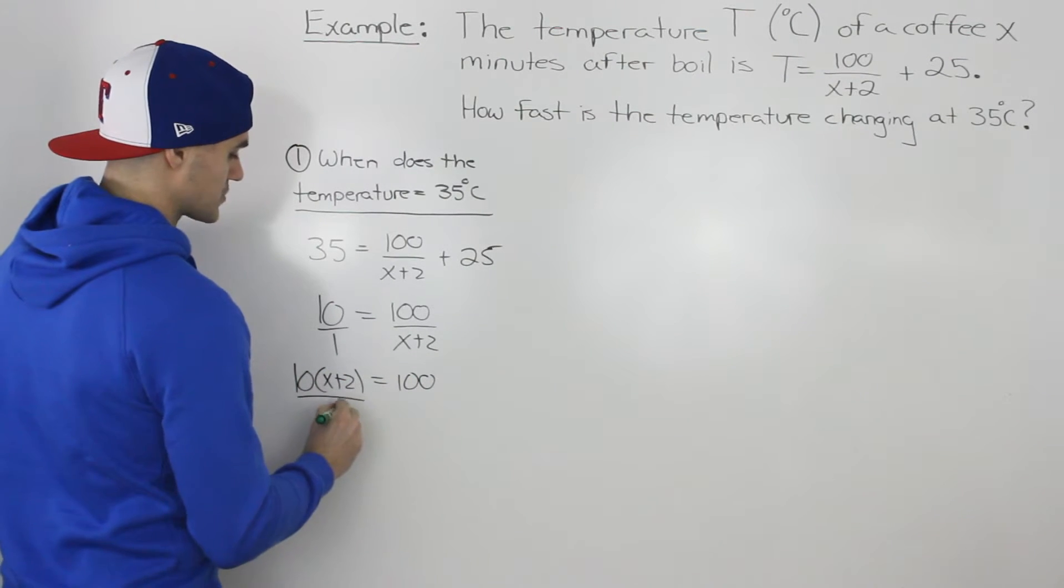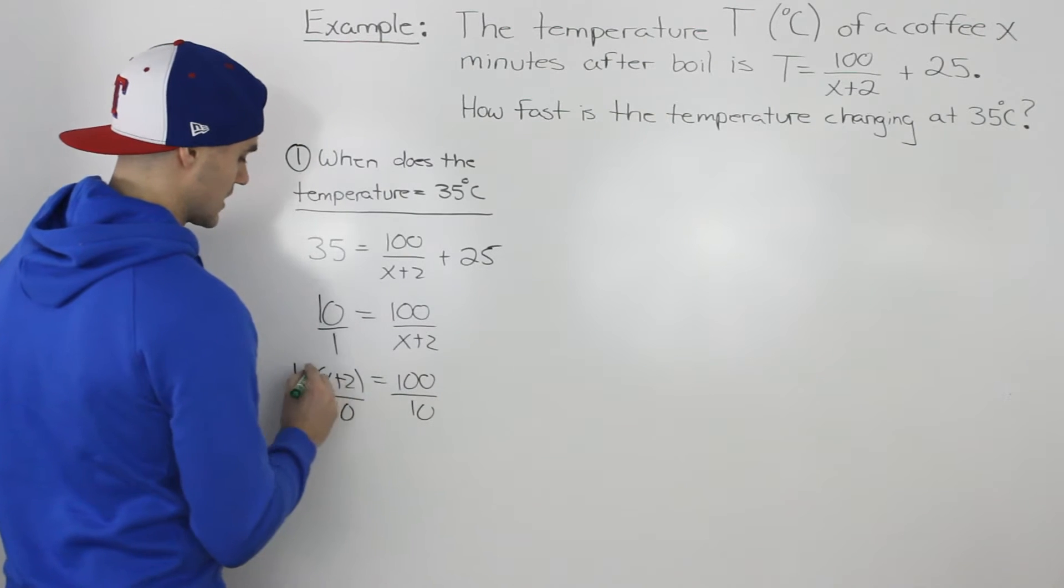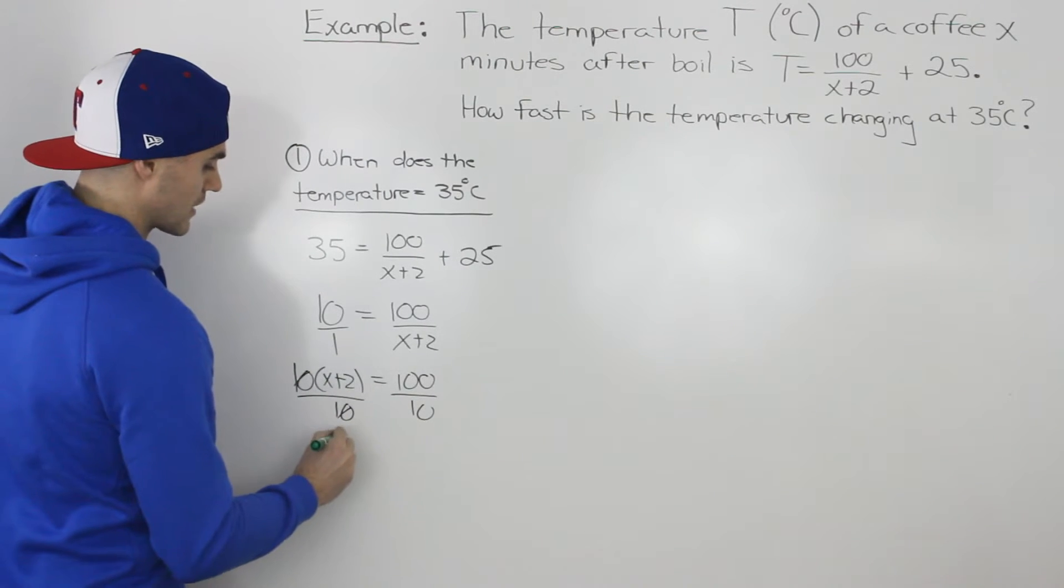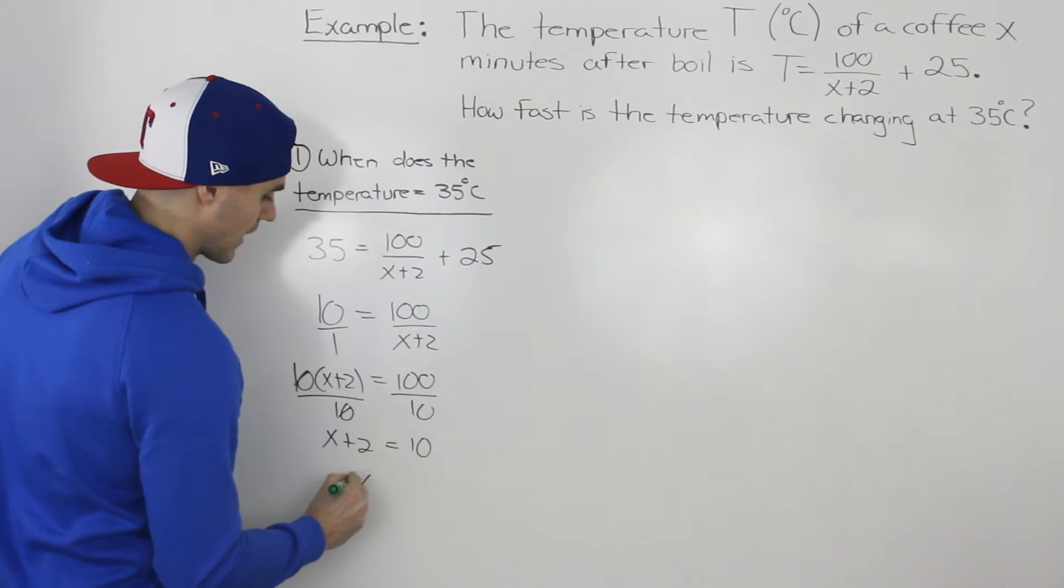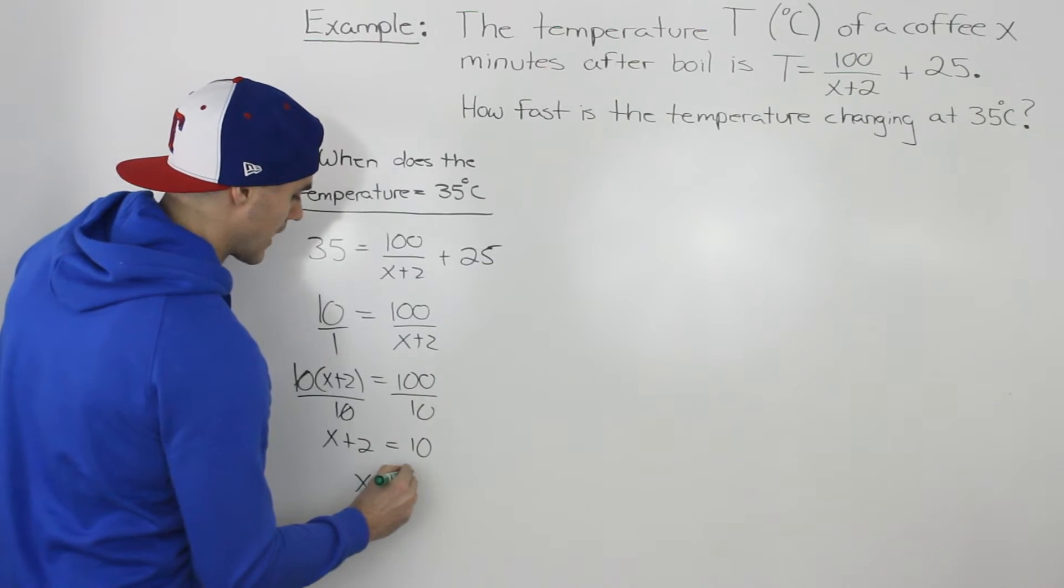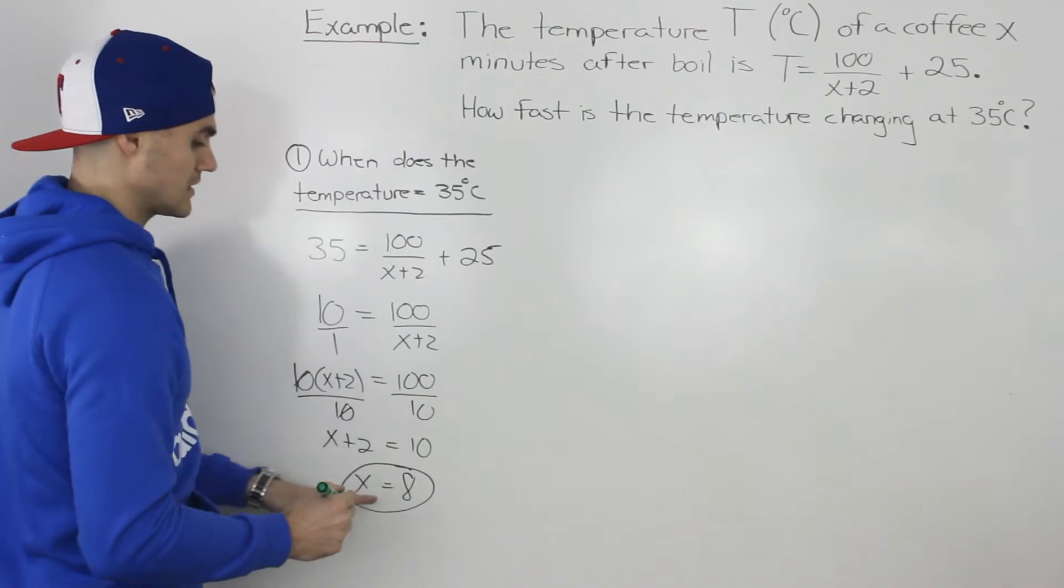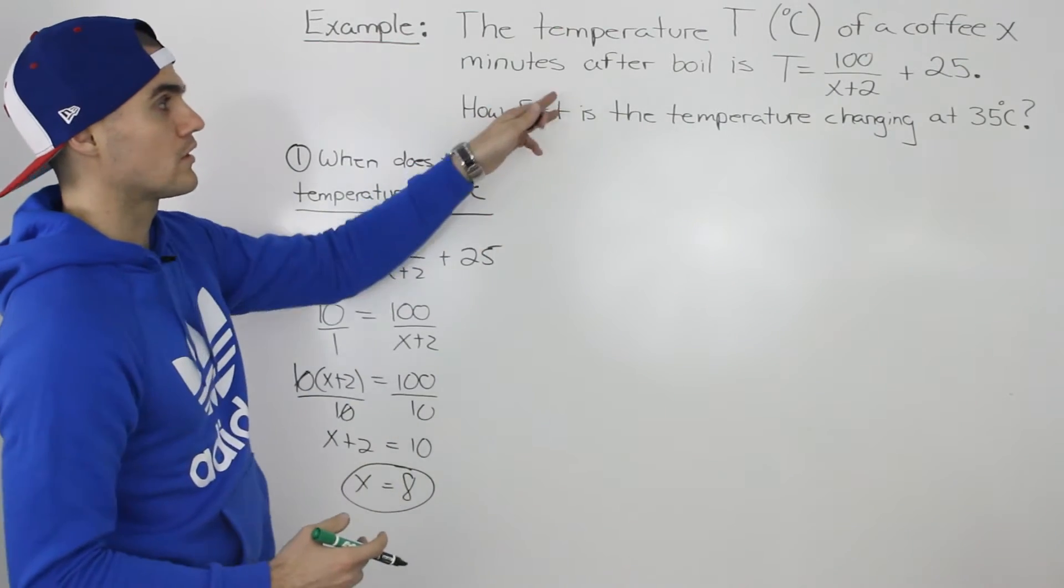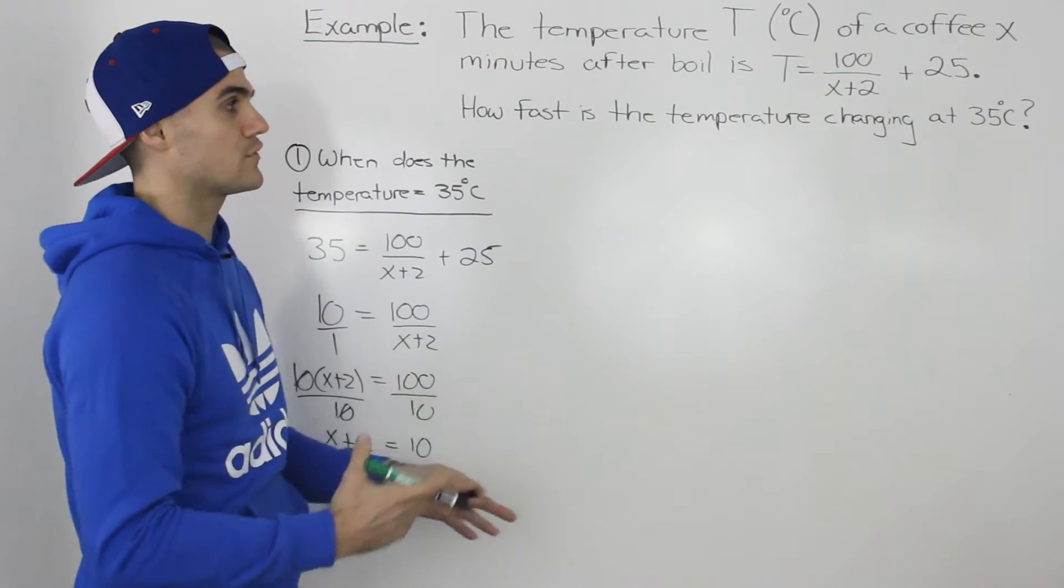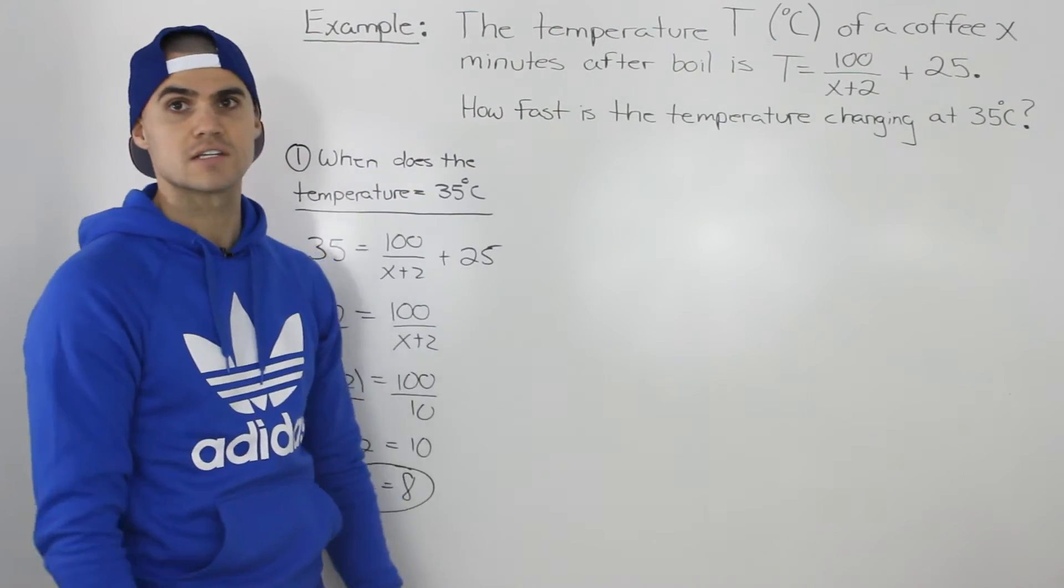Let's divide both sides by 10 to get rid of this 10 here. So we'd have x plus 2 equals 10, so x is equal to 8. So 8 minutes after boil, the temperature of the coffee reaches 35 degrees Celsius.